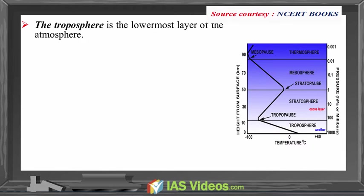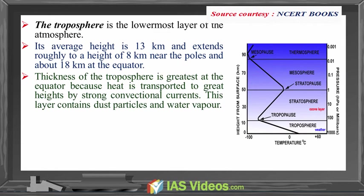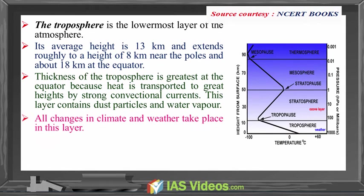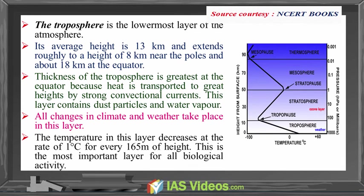The troposphere is the lowermost layer of the atmosphere. Its average height is 13 kilometres, extending roughly to 8 kilometres near the poles and about 18 kilometres at the equator. Thickness is greater at the equator because heat is transported to greater heights by strong convectional currents. This layer contains dust particles and water vapour, and all changes in climate and weather take place here. Temperature decreases at the rate of 1°C for every 165 metres of height. It is the most important layer for all biological activity.